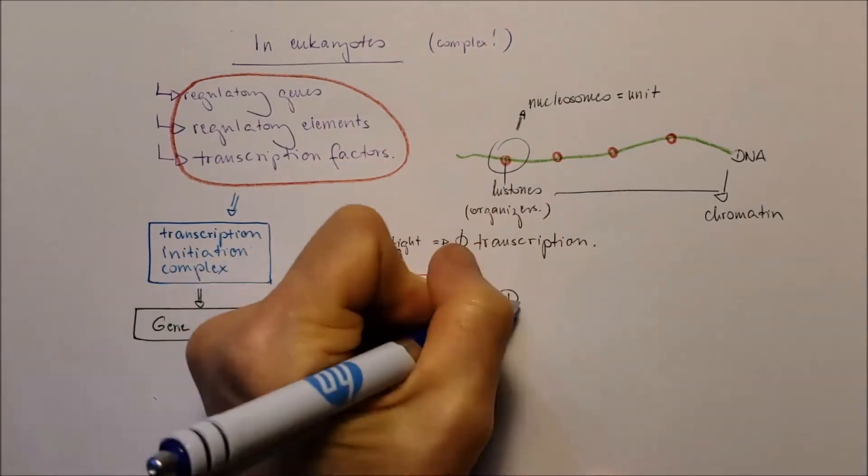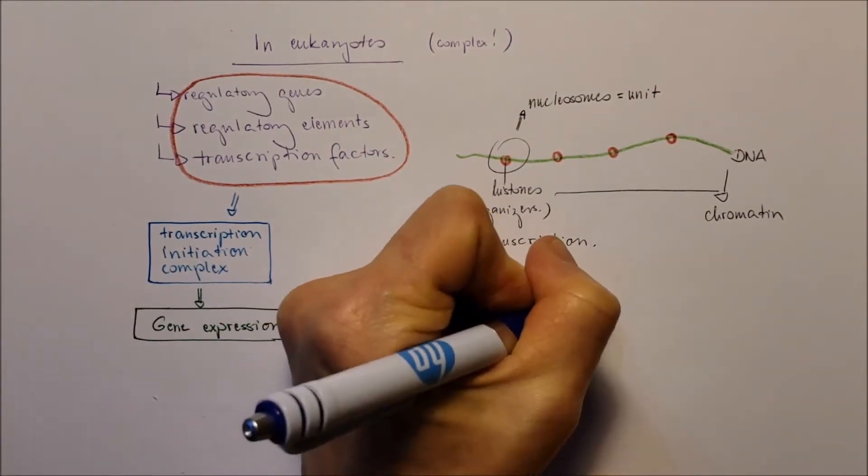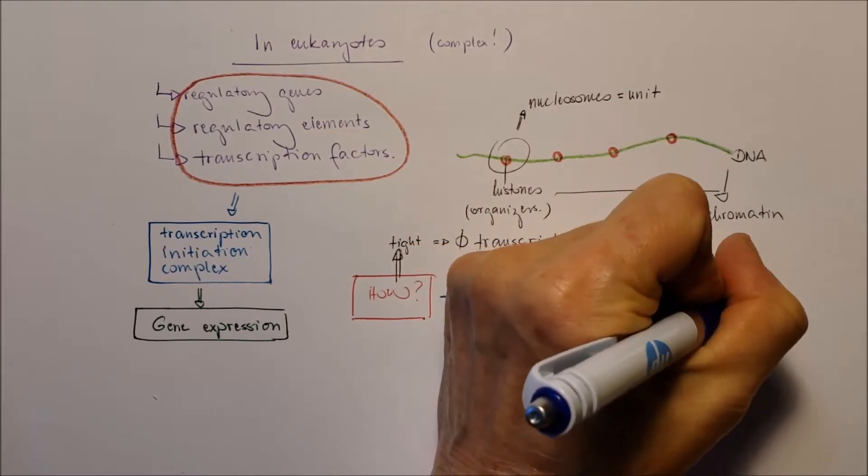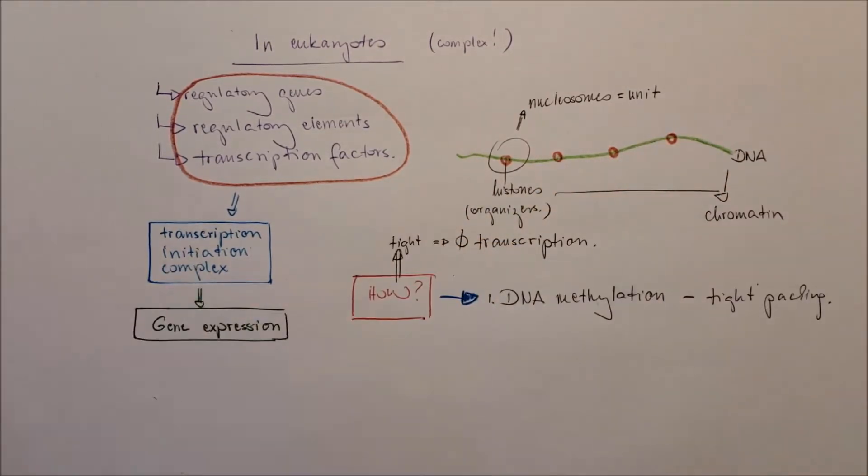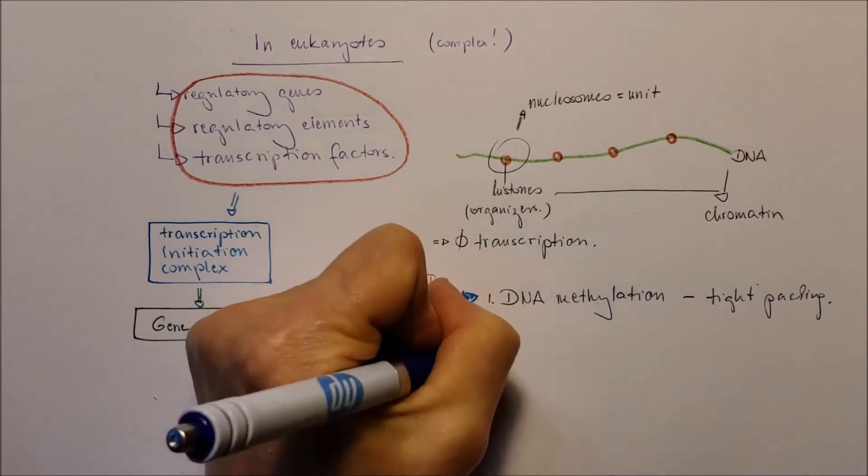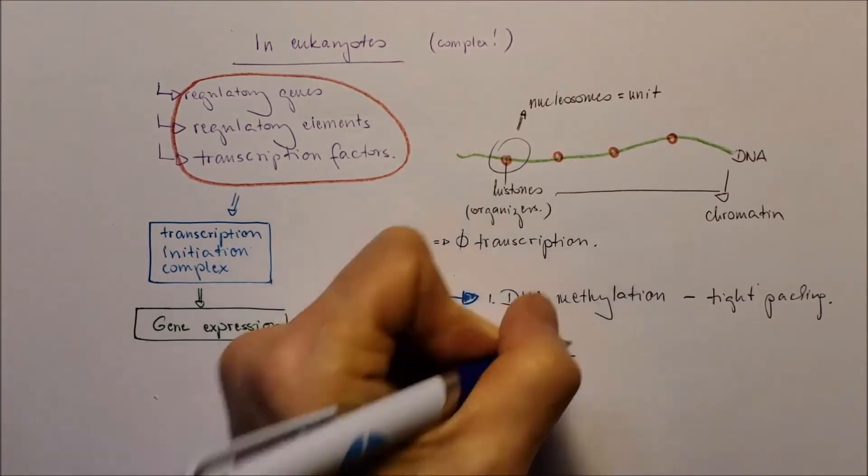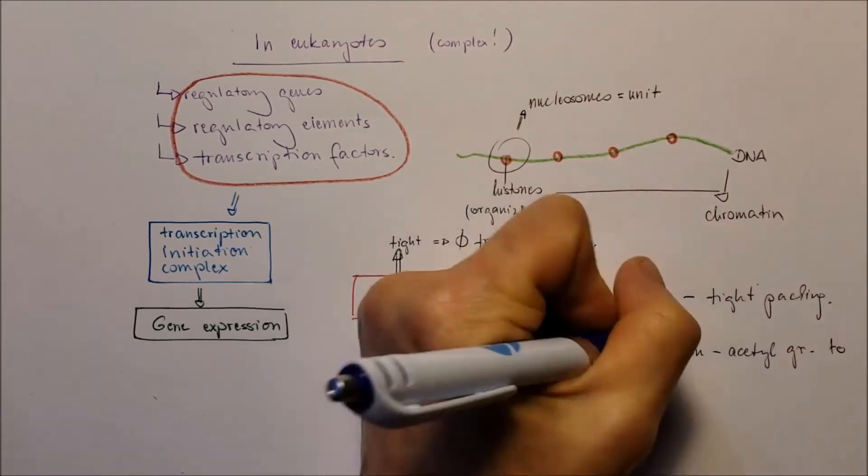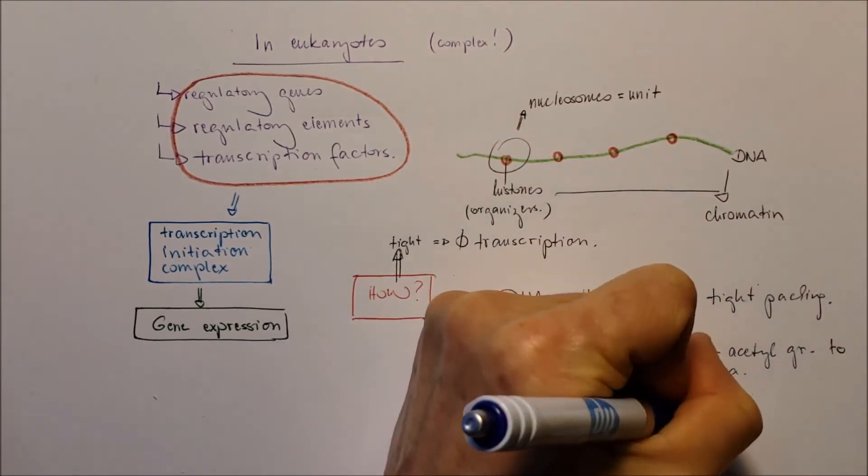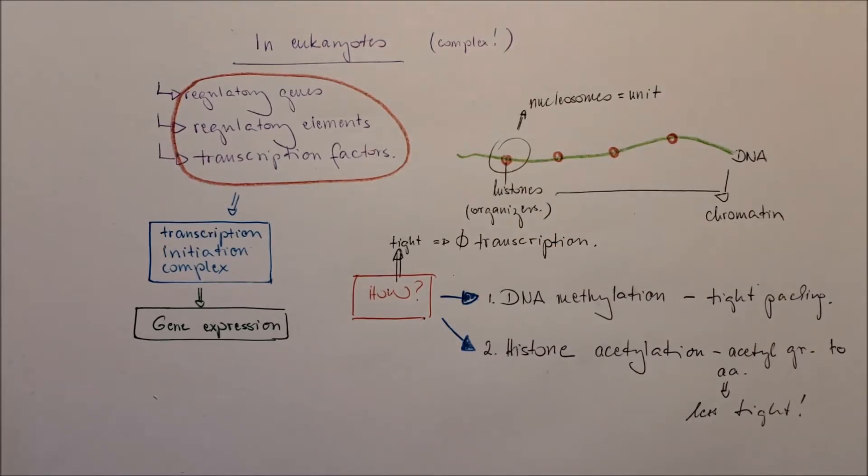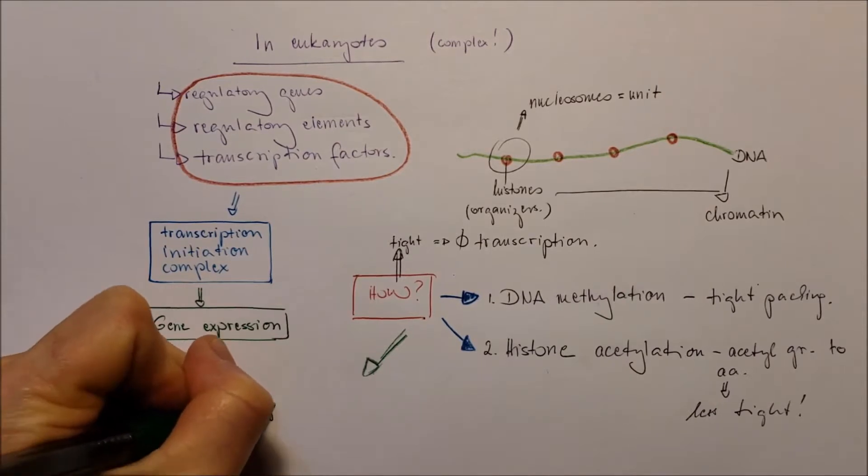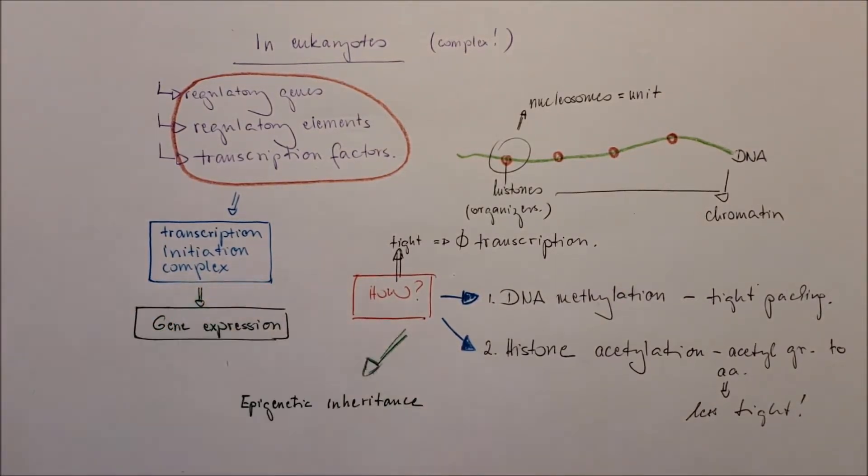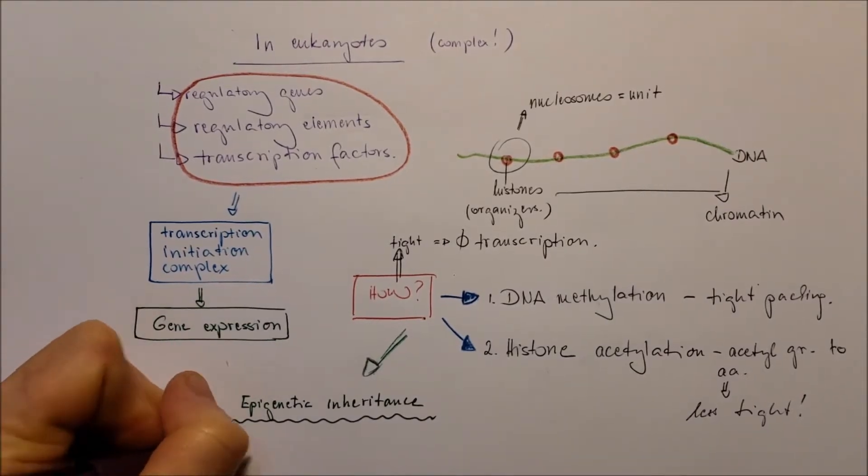By DNA methylation. If the DNA is going to have on their nucleotides some methyl groups, they will tightly pack. And histone acetylation. Acetyl groups are going to bind to amino acids on the histone and make them less tight. In this case, it's going to be transcription prone.